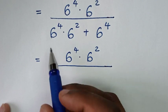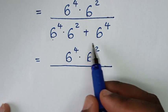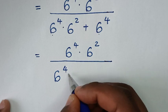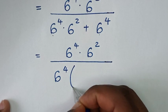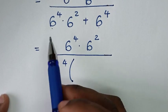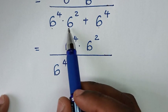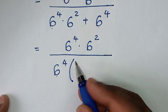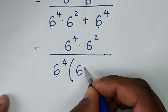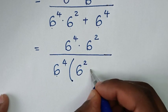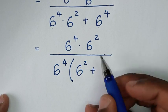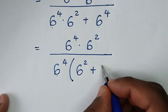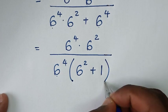In the denominator, 6 power 4 is common, so we take 6 power 4 out of the bracket. Then 6 power 4 times 6 power 2 divided by 6 power 4 gives 6 power 2, then plus 6 power 4 divided by 6 power 4, which is 1, close bracket.